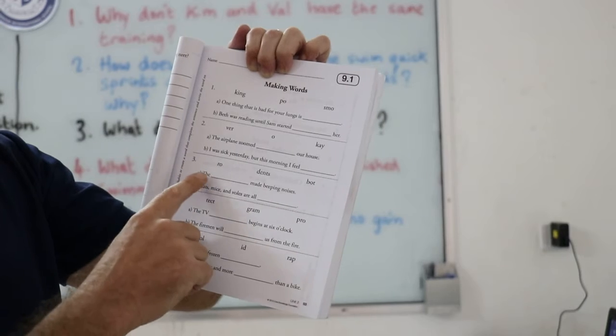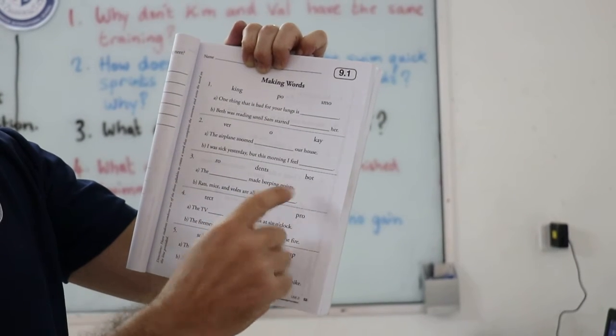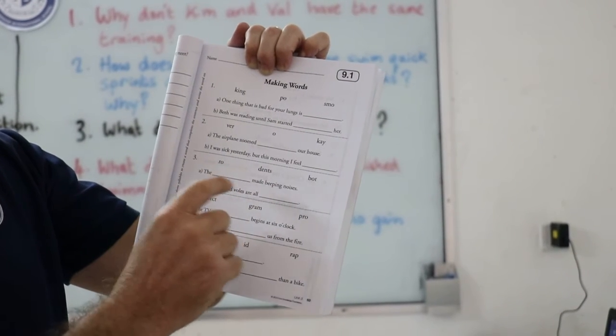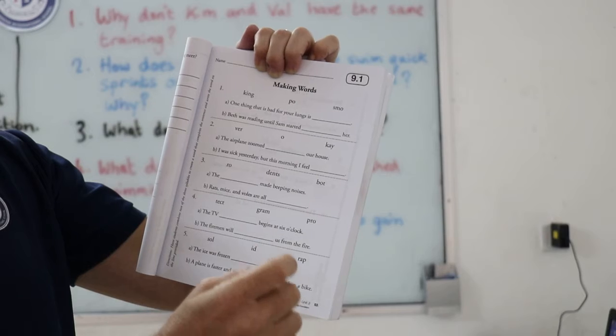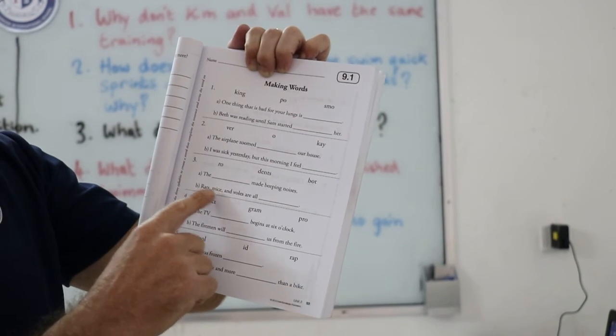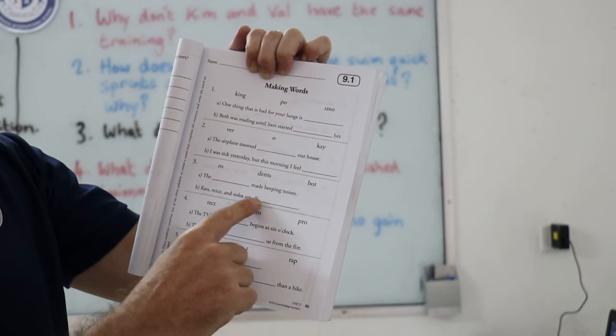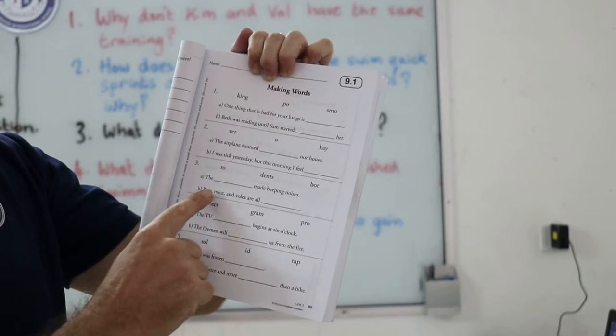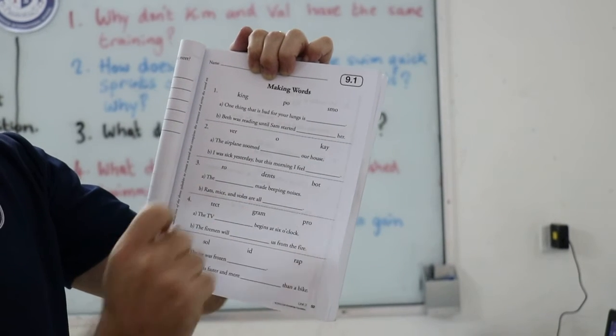Number three, part A, the what made beeping noises. Now, part B, rats, mice and vowels are all what?